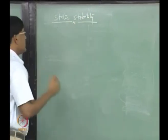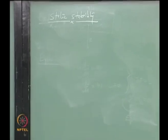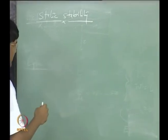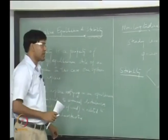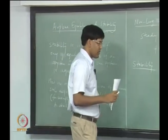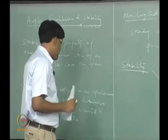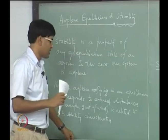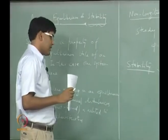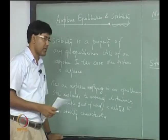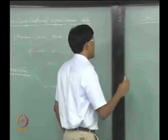These concepts are applicable to any physical system, not just to the airplane. Stability is a property of an equilibrium state. We have to look at an equilibrium state and see how a system, when disturbed from that equilibrium state, responds to the disturbance. So stability refers to the system's property to come back to its original equilibrium state when it is disturbed from there.